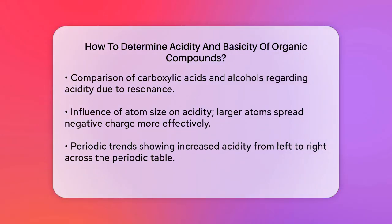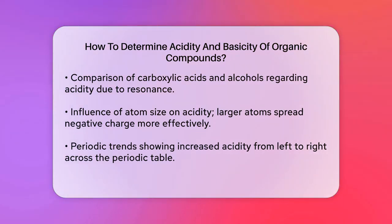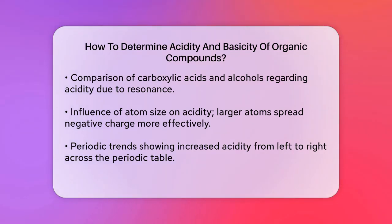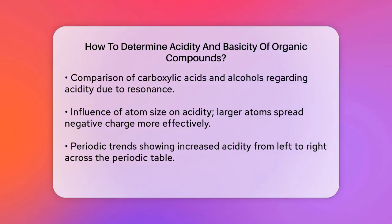Size of the atom. The size of the atom also matters, especially when comparing elements in the same group of the periodic table. Larger atoms spread out the negative charge more, making the conjugate base more stable and the acid stronger. For example, HI is more acidic than HF because the larger iodine atom spreads out the negative charge more effectively than the smaller fluorine atom.